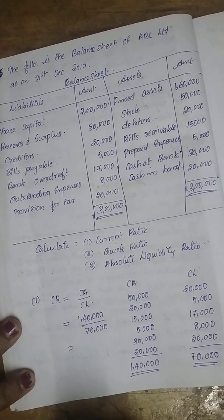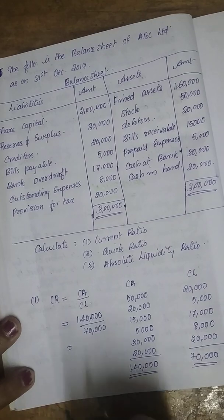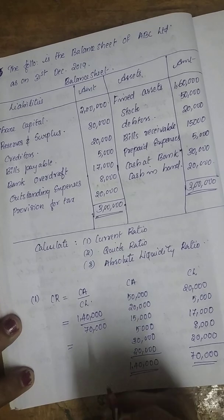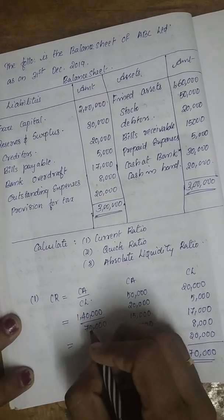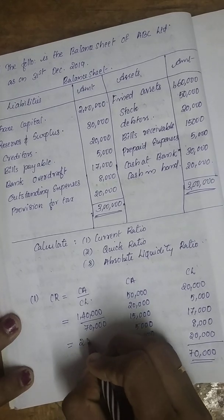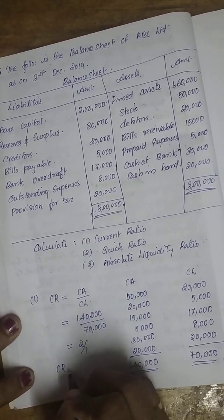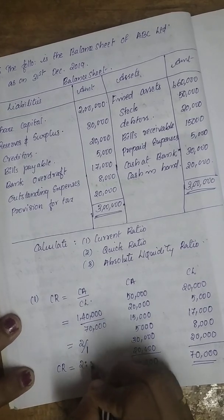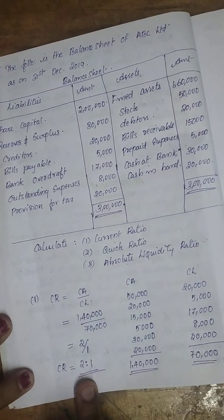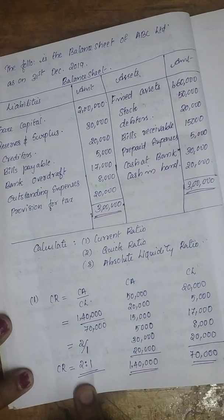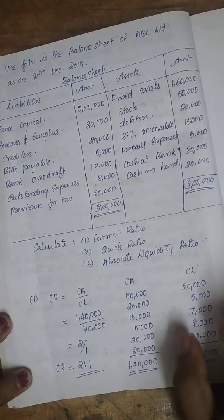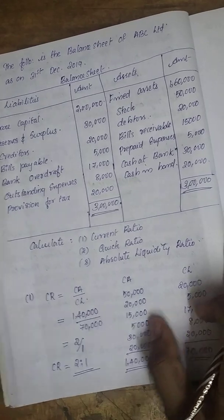Dividing current assets of $1,40,000 by current liabilities of $70,000, we get 2. So the current ratio is 2:1. The standard ideal ratio for current ratio is 2:1, so this result is satisfactory and at the ideal level.